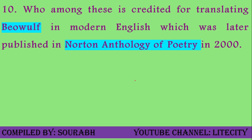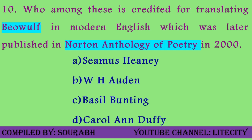Question ten: Who is credited for translating Beowulf into Modern English, which was later published in the Norton Anthology of Poetry in 2000? Options: Seamus Heaney, W.H. Auden, Basil Bunting, or Carol Ann Duffy. Beowulf is considered the first important poem of English literature, and many attempts have been made to translate it. This translation is considered the most authentic because the poet used the typical alliterative mode of that particular time. The answer is Seamus Heaney.